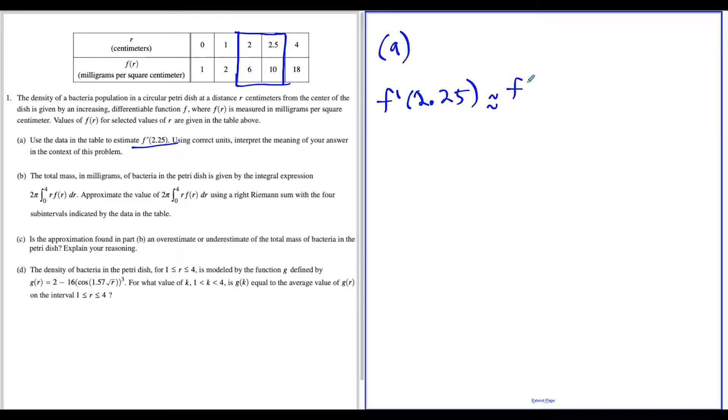That's going to be f of 2.5 minus f of 2 divided by 2.5 minus 2. If we pay attention to the units for f of r, the units are milligrams per square centimeter. We can write milligrams over centimeters squared, but this is over the units for r, which is centimeters.